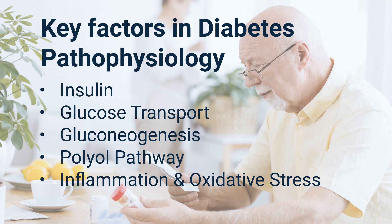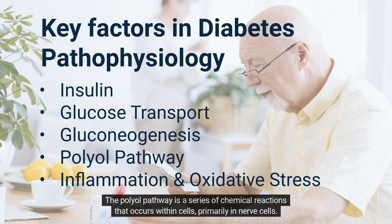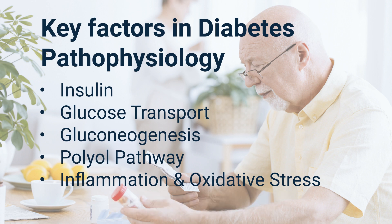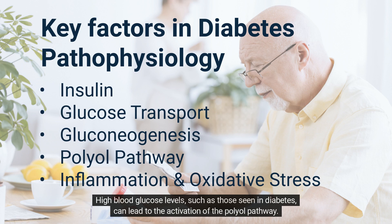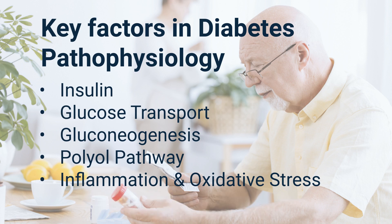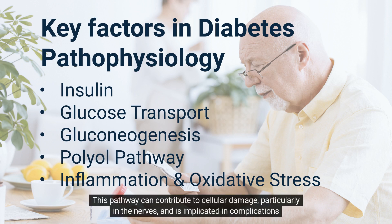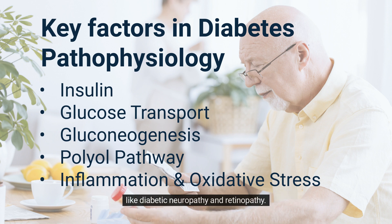Key factor 4 — Polyol Pathway: The polyol pathway is a series of chemical reactions that occurs within cells, primarily in nerve cells. High blood glucose levels, such as those seen in diabetes, can lead to the activation of the polyol pathway. This pathway can contribute to cellular damage, particularly in the nerves, and is implicated in complications like diabetic neuropathy and retinopathy.